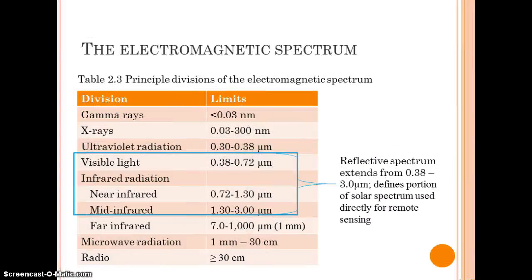As Campbell and Wynne, 2011 note, there are no distinct, clear, or sharp breaks in the electromagnetic spectrum, but we have established subdivisions for our own convenience and understanding. In remote sensing, we are most concerned with the reflective spectrum, which extends from approximately 0.38 to 3.0 micrometers. The reflective spectrum is defined as the portion of the solar spectrum used directly for remote sensing. (Campbell and Wynne, 2011, page 34)